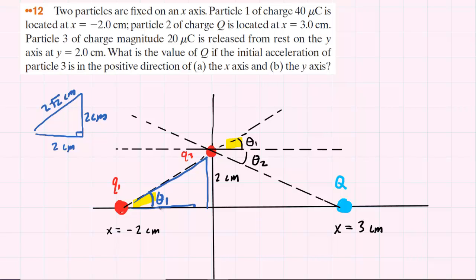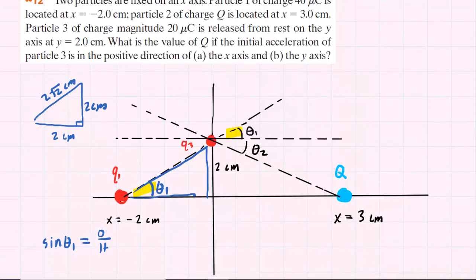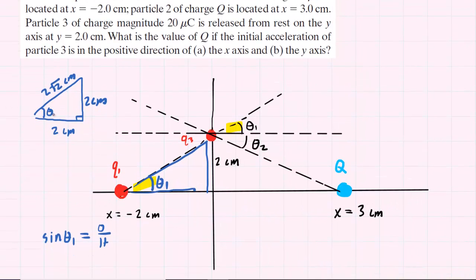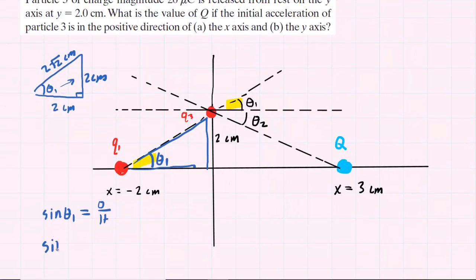Now, what I'd like to do is find an expression for the sine of theta 1, and we will see why that is going to be helpful. The sine of theta 1 equals the opposite over the hypotenuse. Looking at our triangle, the opposite side is 2 and the hypotenuse is 2 radical 2. We can simplify by canceling the 2s, which leaves a 1 in the numerator. So we can see that the sine of theta 1 is 1 over root 2.